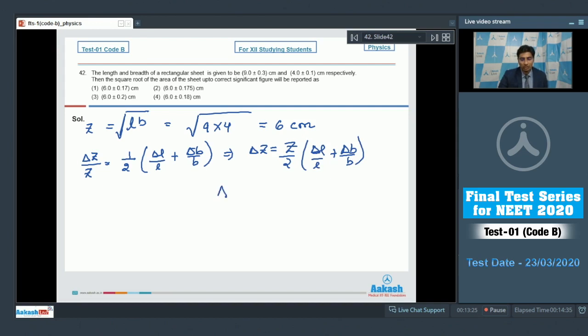Substituting the values, delta Z will be equal to 6 by 2, delta L is 0.3 so 0.3 by 9, and delta B is 0.1 so 0.1 by 4. This turns out to be equal to 0.175 and that can be rounded off to 0.2. And therefore dear students the correct answer for this question is 6 plus minus 0.2 centimeters. And hence for this question the correct answer is option number 3.